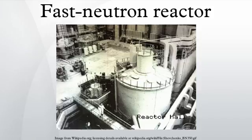On average, more neutrons per fission are produced from fissions caused by fast neutrons than from those caused by thermal neutrons. This results in a larger surplus of neutrons beyond those required to sustain the chain reaction. These neutrons can be used to produce extra fuel, or to transmute long half-life waste to less troublesome isotopes, such as was done at the Phénix reactor in Marcoule in France, or some can be used for each purpose. Though conventional thermal reactors also produce excess neutrons, fast reactors can produce enough of them to breed more fuel than they consume. Such designs are known as fast breeder reactors.